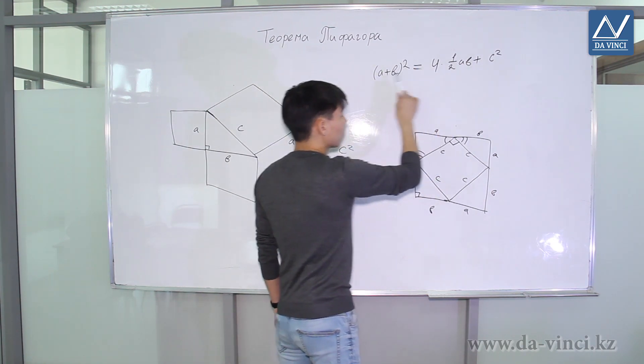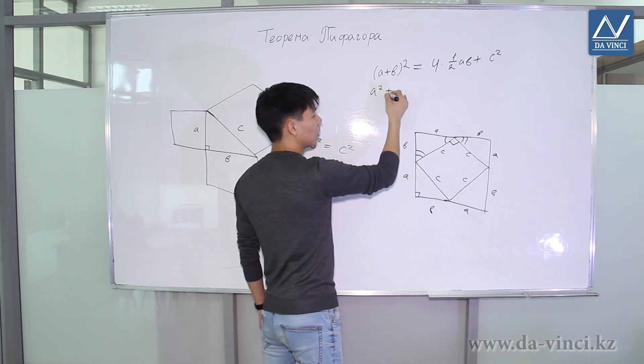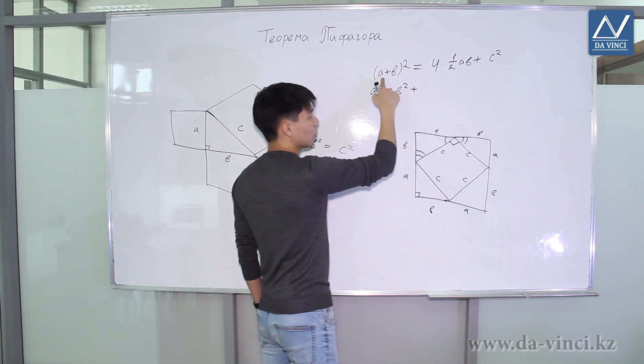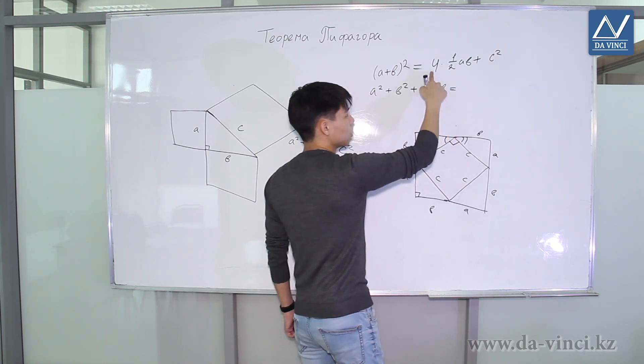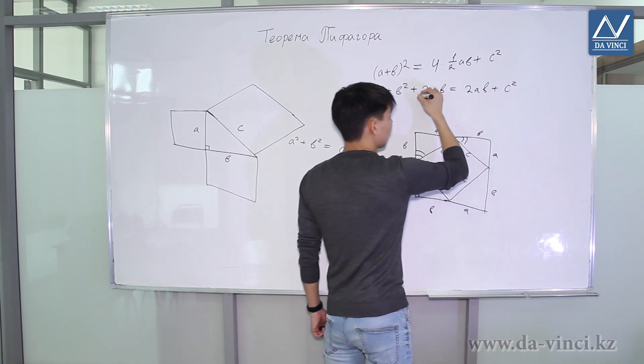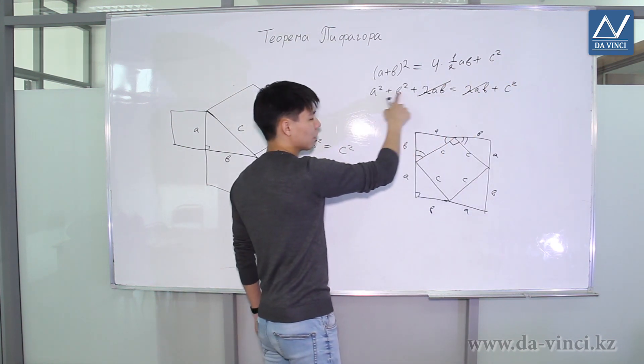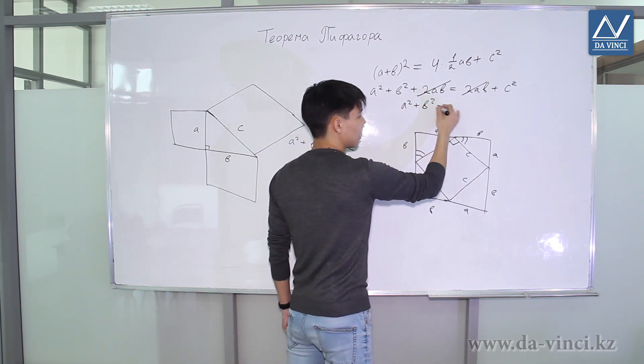We got the following expression. We should expand the formula for the square of the sum, and then we get A squared plus B squared plus a double product of 2AB. This equals 4 multiplied by one half, that is 2AB plus C squared. By reducing 2AB, we get A squared plus B squared equals C squared. That is, we have proved the Pythagorean theorem.